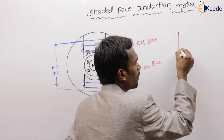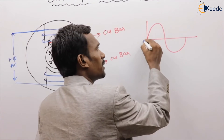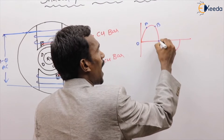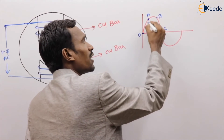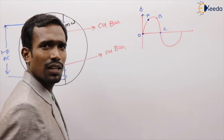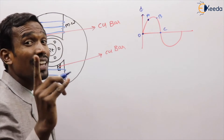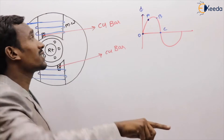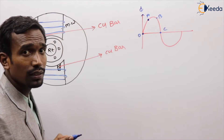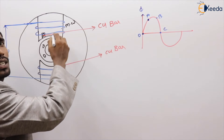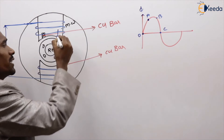For example, I am giving the single phase AC supply. This is O, A, B and C. From O to A, the change in flux is maximum — there is a lot of change in flux. That's why, due to mutual induction, the flux will produce in the shaded rings. According to Lenz's law, the induced flux will oppose the main field flux. So the resultant flux is zero in the shaded area, and the total flux is concentrated at the unshaded part of the main pole.